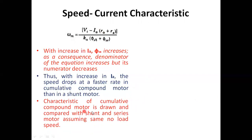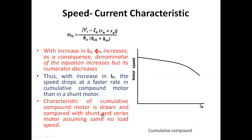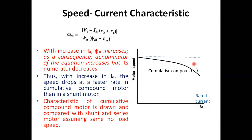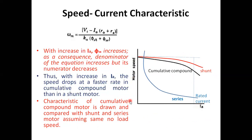The characteristics of the cumulative compound motor are shown here — speed is dropping with increasing Ia. The rated current and normal speed are marked. For comparison, the speed-current characteristics of the shunt motor and the series motor are also plotted, giving an overview of the speed-current characteristics of different motor types.